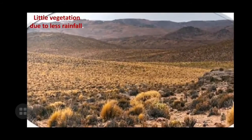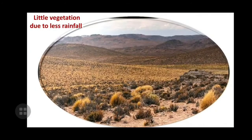Another feature is little vegetation due to less rainfall. Since the area receives very less rainfall, you will find that vegetation is very scarce. The growth of crops, trees, plants, and other flora and fauna is very less in desert areas.